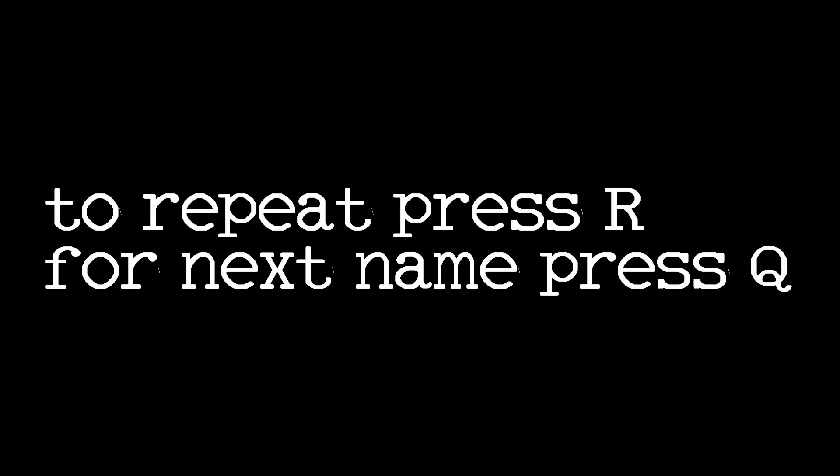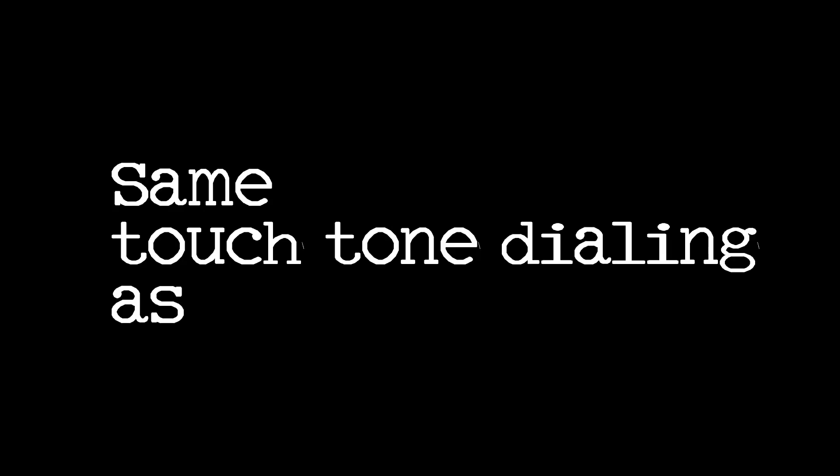Police number is not recorded. Press Pound. Press Choice. Press R or Q. To repeat, press R. For next name, press Q. Press R, C or M. Received at record start, record stop. K.I.M. Same touch tone dialing as K.I.M.